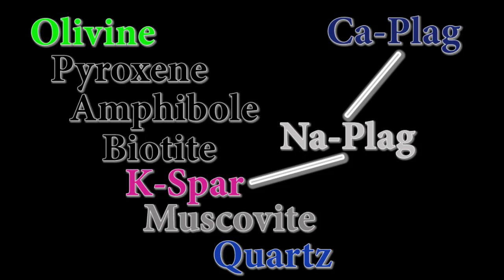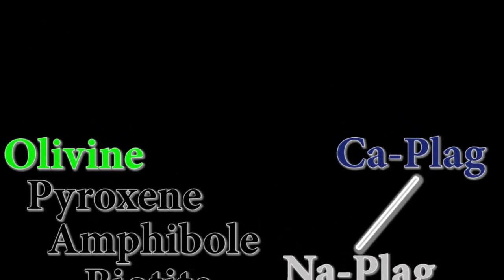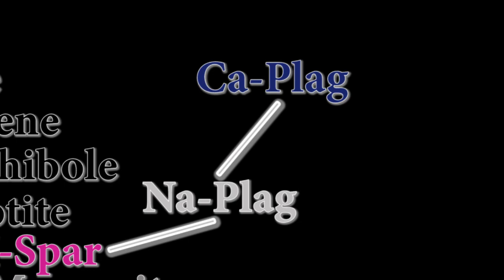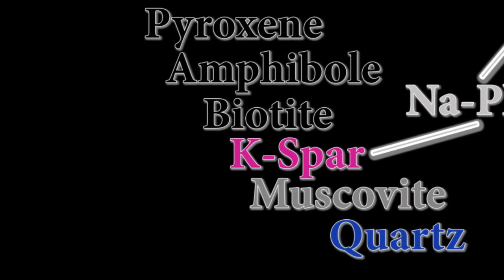It gets cumbersome to say calcium-rich plagioclase feldspar versus orthoclase feldspar, so we tend to abbreviate. A calcium-rich versus sodium-rich plagioclase is sometimes called CA-plage or NA-plage respectively, and orthoclase feldspar is also called potassium feldspar, and since the symbol for potassium is K, you'll often hear geologists refer to this mineral as K-spar.